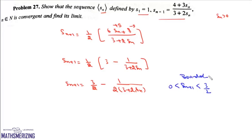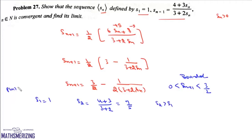Using induction, we prove the sequence is monotonically increasing. We compute S₁ = 1 and S₂ = (4 + 3)/(3 + 2) = 7/5. Our assertion P(n) is that Sₙ₊₁ > Sₙ.